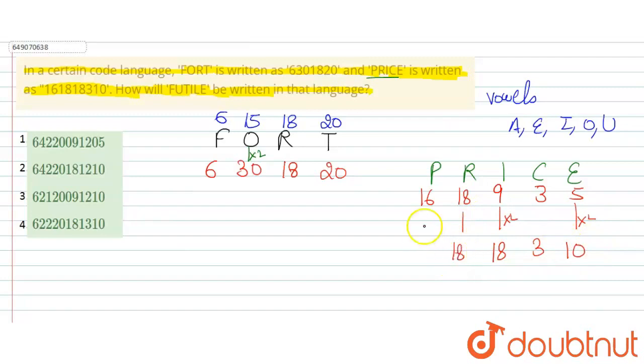Then here we have 18, here we have 18, here we have 16. So 16, 18, 18, 3, and 10.